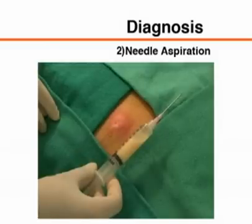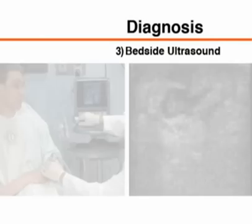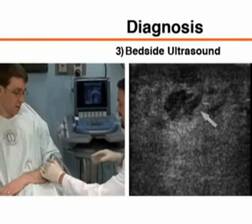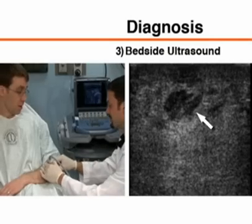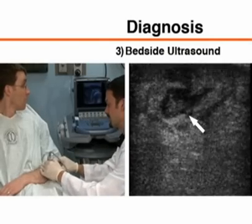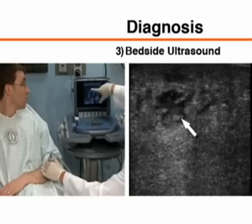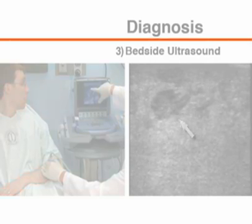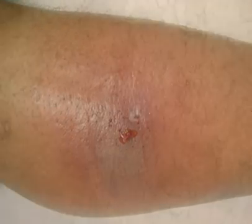Needle aspiration of a suspected skin abscess can assist the clinician in making the diagnosis of a localized abscess when results of physical examination are equivocal. Bedside ultrasound is a valuable adjunctive tool for identification of localized areas of fluid under the skin that may represent isolated areas of infection.